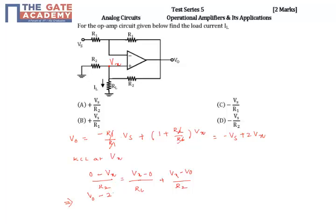Already minus Vx is there from the left hand side. From right hand side I got one more Vx. So V0 minus 2Vx by R2 equal to Vx by RL. So this implies